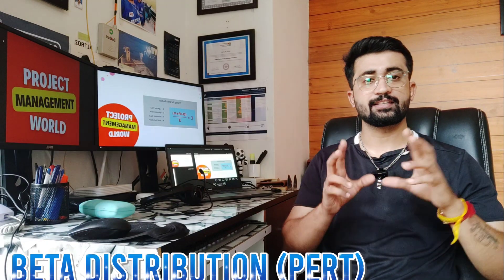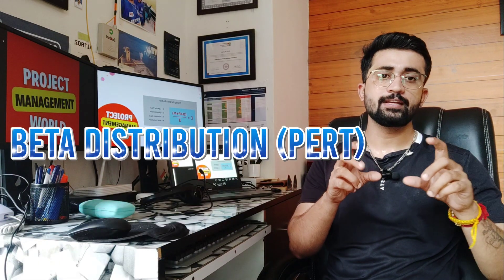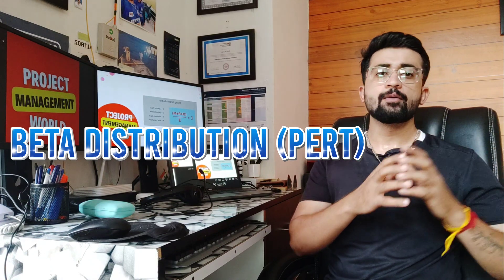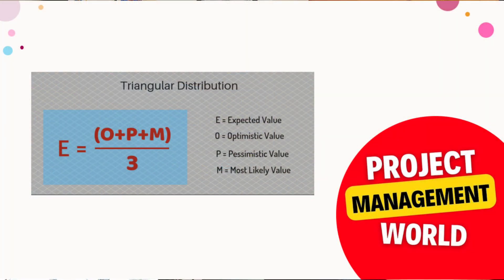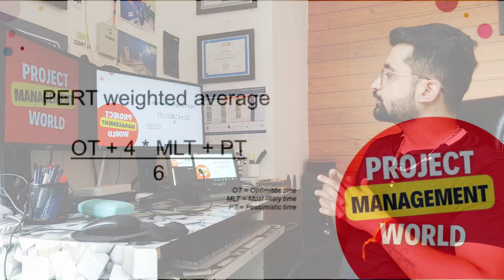Under three-point estimation, we have two formulas. The first is triangular distribution. The expected value formula is: (O + P + M) / 3, where O is optimistic, P is pessimistic, and M is most likely. We are simply averaging all three values - optimistic, pessimistic, and most likely.